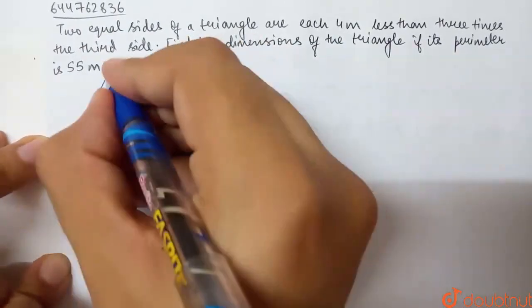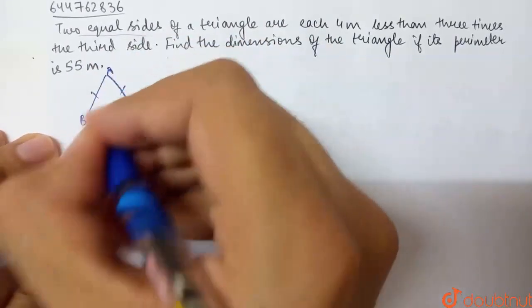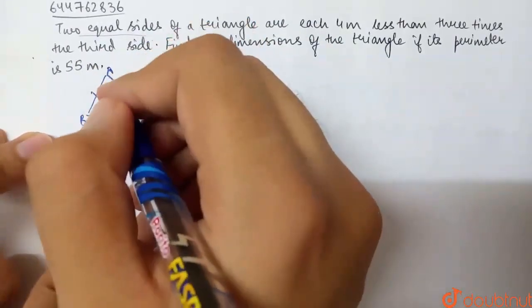Let's suppose we have a triangle ABC. This question says two equal sides, so AB and AC are two equal sides.